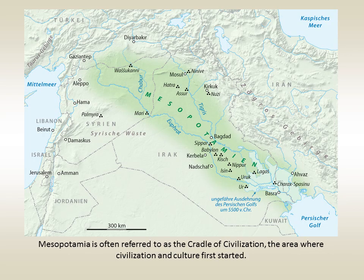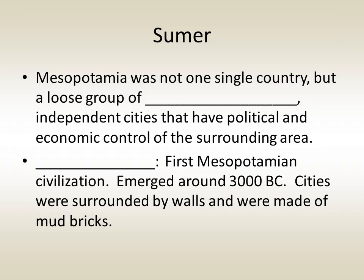This map shows the area commonly referred to as Mesopotamia. It's also referred to as the Cradle of Civilization, the area where civilization and culture first started. Mesopotamia was not one single country, but rather a loose group of city-states — independent cities that have political and economic control of the surrounding area — though they did have certain cultural elements in common.